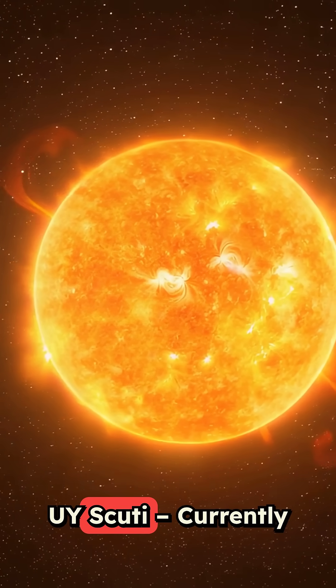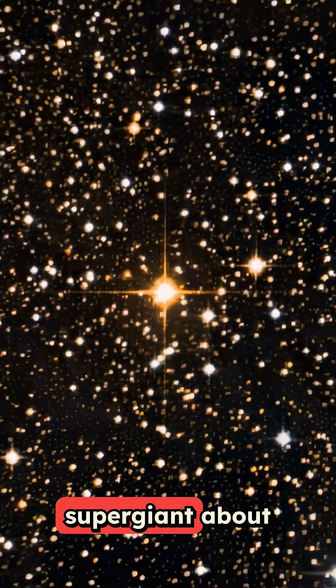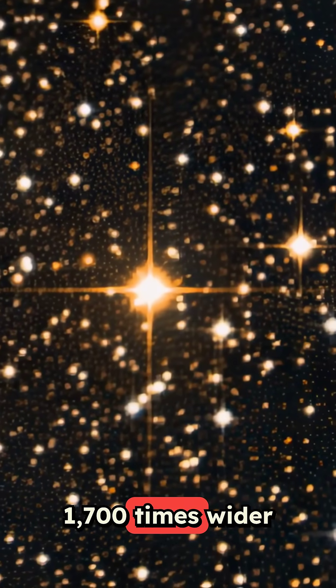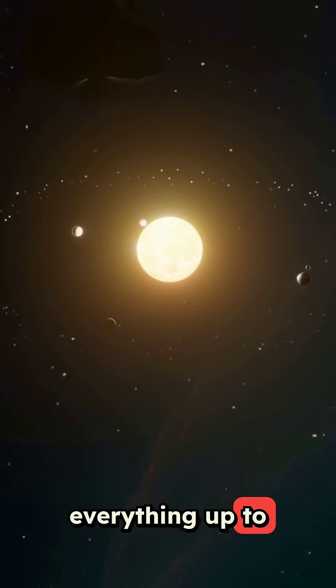U.Y. Scuti, currently considered the largest known star by radius, is a red supergiant about 1,700 times wider than our Sun. If placed in our solar system, it would engulf everything up to Saturn.